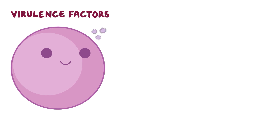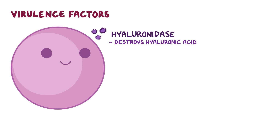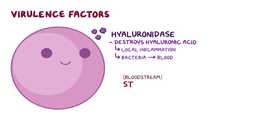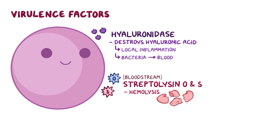Strep pyogenes uses toxins like hyaluronidase, which destroys hyaluronic acid — a cement substance that keeps cells of the connective tissue and blood vessels tightly linked. Destruction of hyaluronic acid results in local inflammation and enables the bacteria to spread to the bloodstream. In the bloodstream, strep pyogenes uses streptolysin O and S, which are toxins that cause hemolysis, or red blood cell destruction.